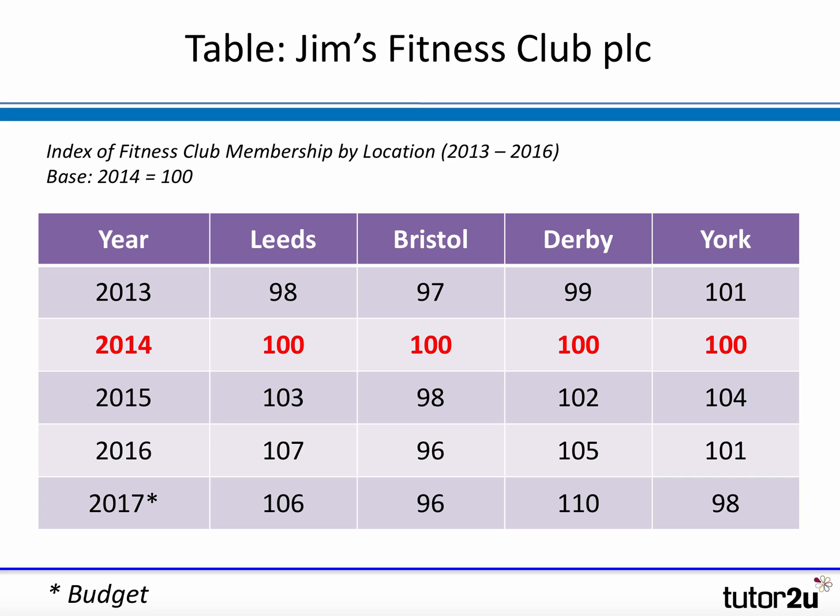Let's do a quick exercise to practice interpreting index numbers. You might be given a table like this one about a fitness club with four locations: Leeds, Bristol, Derby, and York. The index is measuring membership by location — the number of members — with 2014 as the base. So whatever the membership was in 2014 at each location, that's our base of 100. How does the membership of each club change in relation to that base?